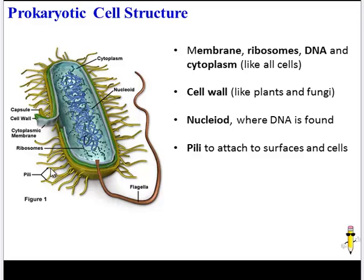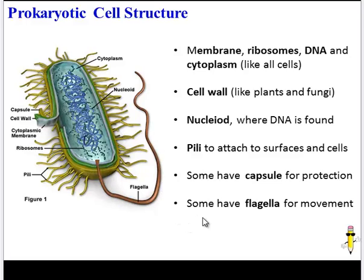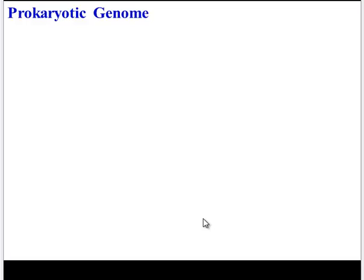Bacteria also have pili — little projections that help them attach to surfaces and other cells. Some bacteria will have a capsule surrounding their cell wall for added protection, and some will have a flagella, a long tail, to help them move.